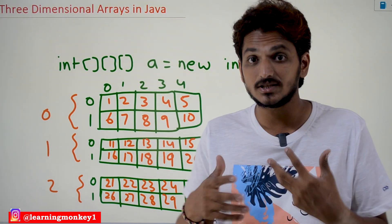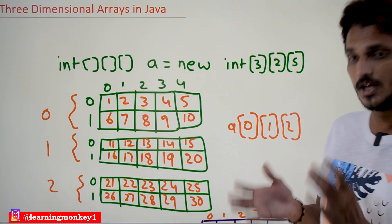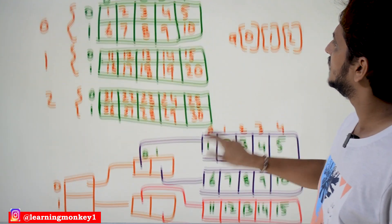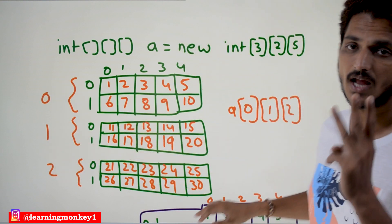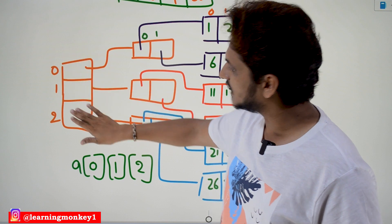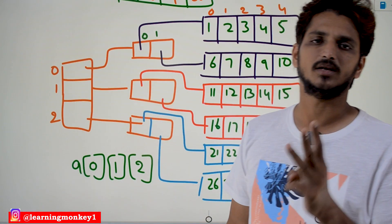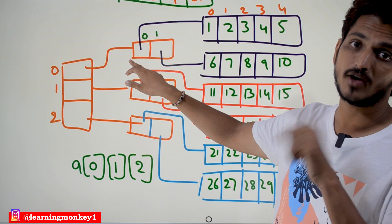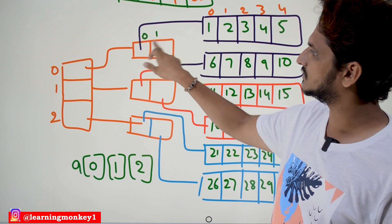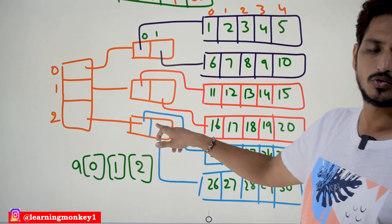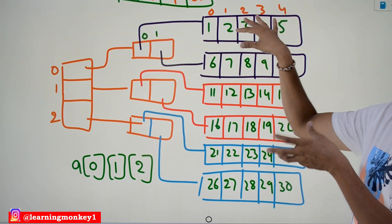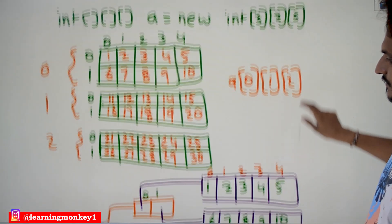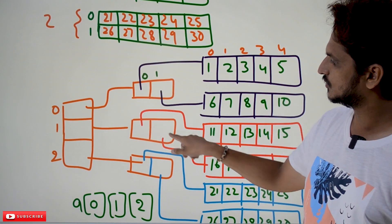Now, coming to memory allocation — how memory is allocated to three-dimensional arrays. In our last class, we discussed how memory is allocated to two-dimensional arrays; the same way applies here. Total three two-dimensional arrays are needed, so the first array has three spaces. Each space points to a two-by-five array, so the second array shows two spaces, with each space pointing to a five-space array — because five columns and two lines.